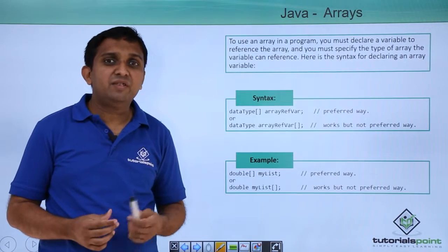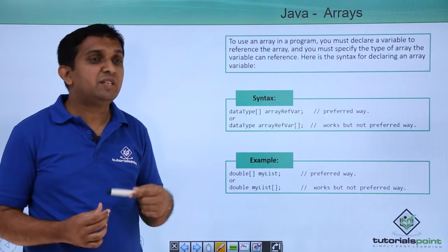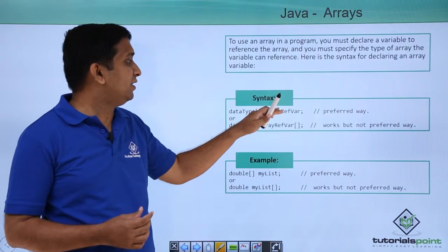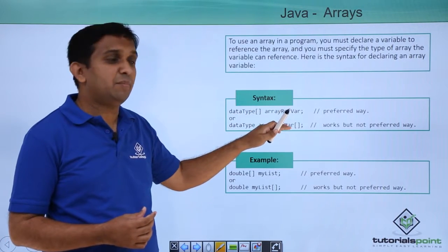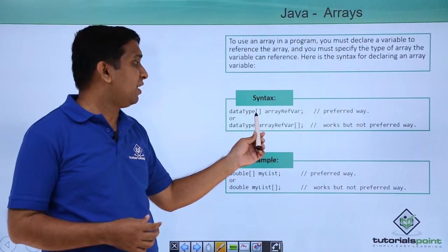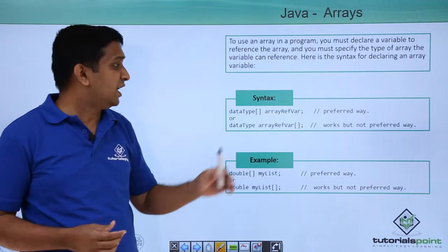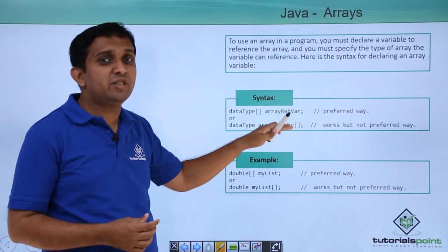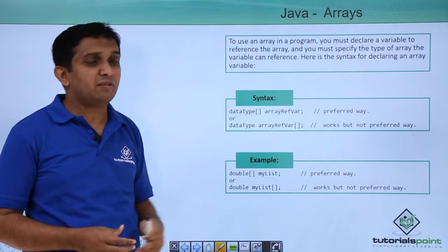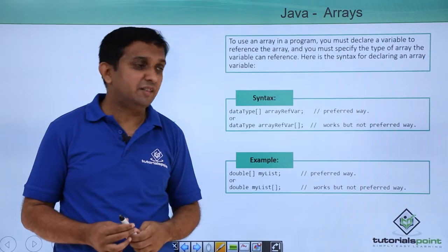When you create an array, first you have to create the reference for the array. In Java, you need to declare the reference, and you can declare it something like this or something like this. But the first one is the preferred way. These subscripts are written after the data type and before the name of the reference. If you write it the other way, it won't throw any error, but this is the better option. The example is shown here where an array of double elements is created.